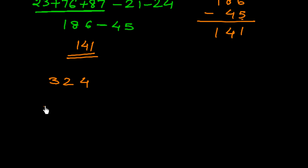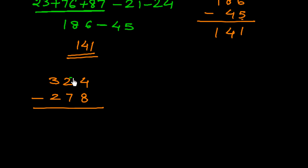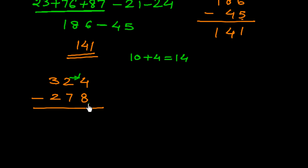Now let's look at three-digit subtraction: 324 minus 278. In the unit place, 4 is smaller than 8, so it's impossible to subtract directly. We borrow 1 from the tens place, converting it: 10 plus 4 gives us 14. Then 14 minus 8 equals 6.